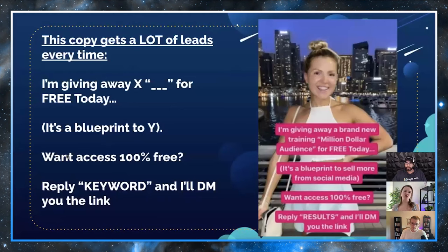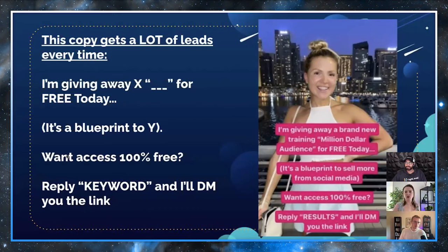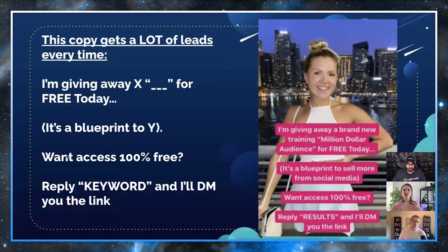Let me read through one more time so you can fill in the blanks. 'I'm giving away a brand new training' — or workshop, or PDF. Then the title. Second line: 'It's a blueprint to [outcome].' Third line: 'One: access 100% free. Reply [keyword] and I'll DM you the link.' Remember, you can have the entire automation set up through your HighLevel account — when someone replies with the keyword, the whole thing is automated. We showed you how to do that yesterday; you can watch the replay.